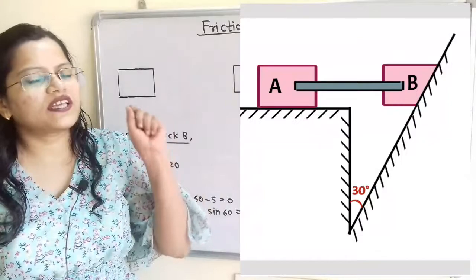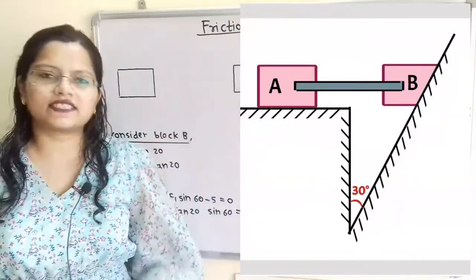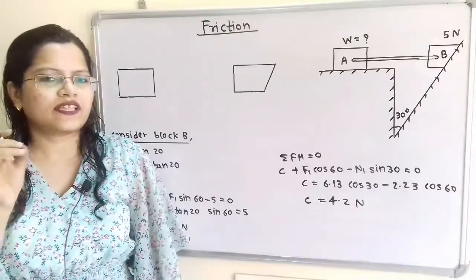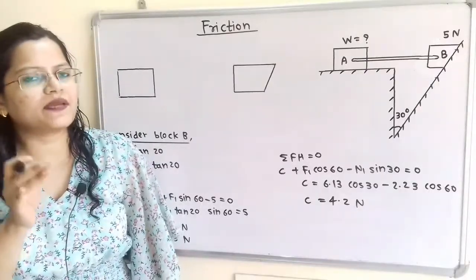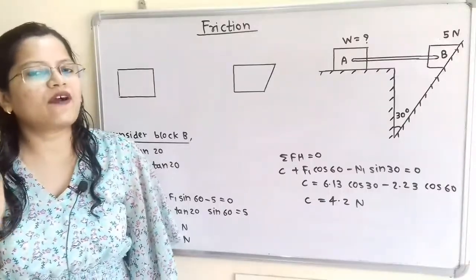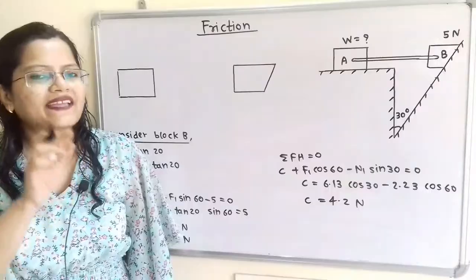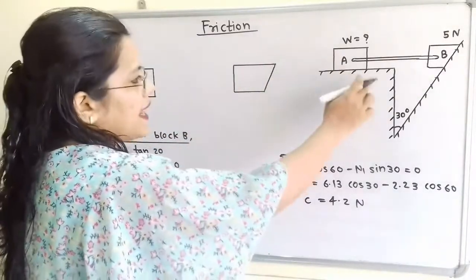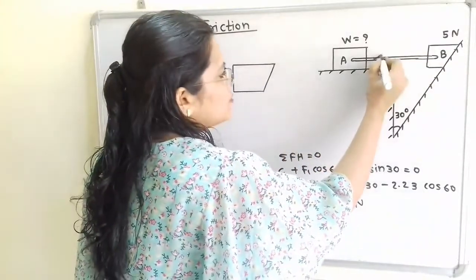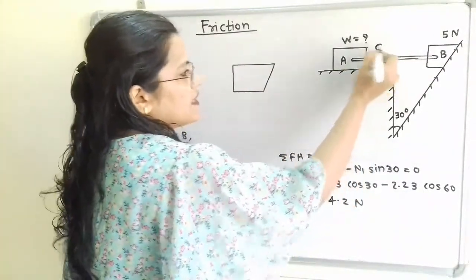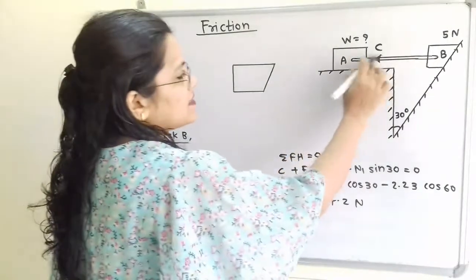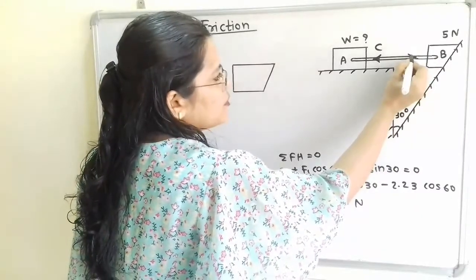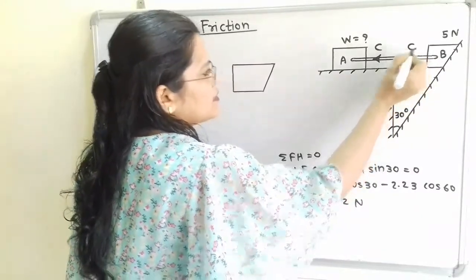Now, if we observe, the horizontal bar is inextensible. So the force applied by the bar is towards the block. We will show this force as C. The magnitude is same but direction is opposite. So force applied by bar on block A is towards block A, denoted with letter C. In the same way for the horizontal bar, force applied on block B has the same magnitude but opposite direction, that is C.